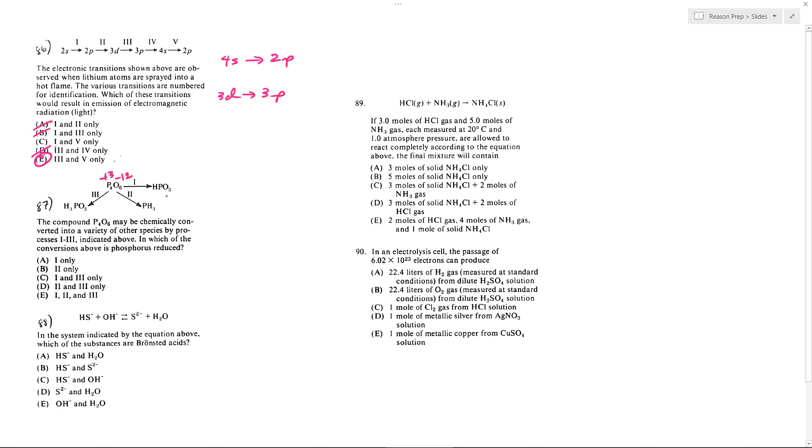This hydrogen is +1. That leads to a phosphorus of +5. That has been oxidized. Going from +3 to +5 is oxidation. So we can get rid of anything with 1 in it because that's oxidation.